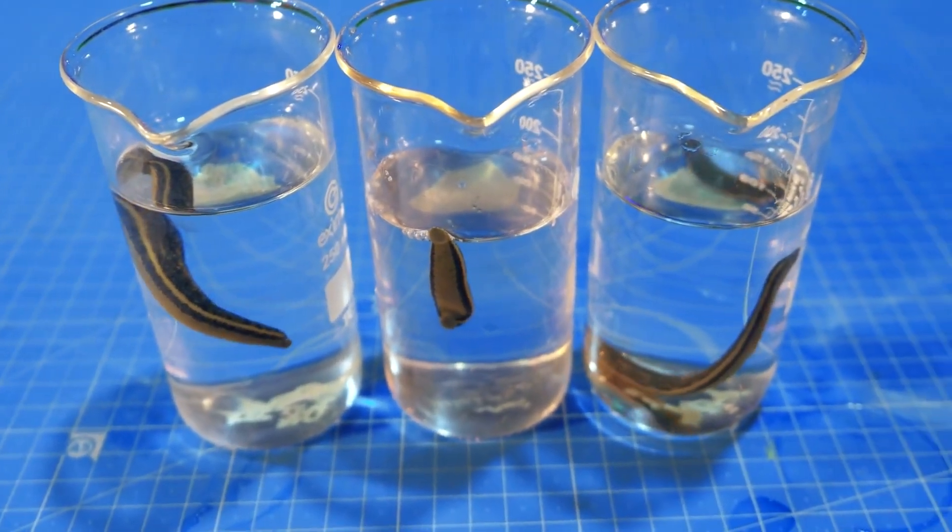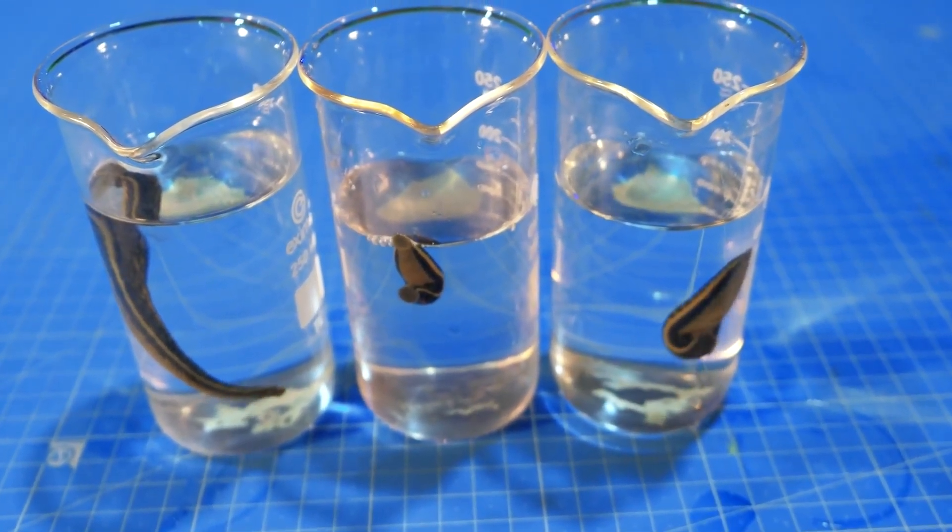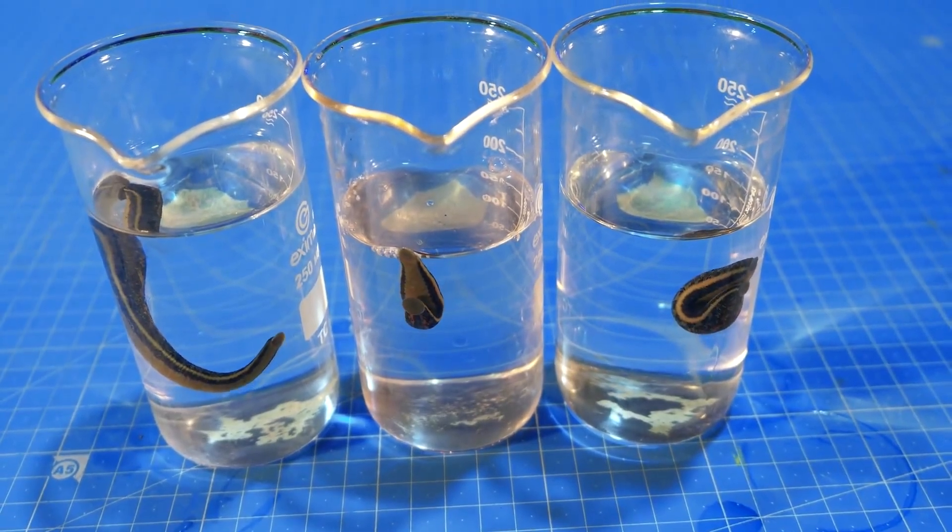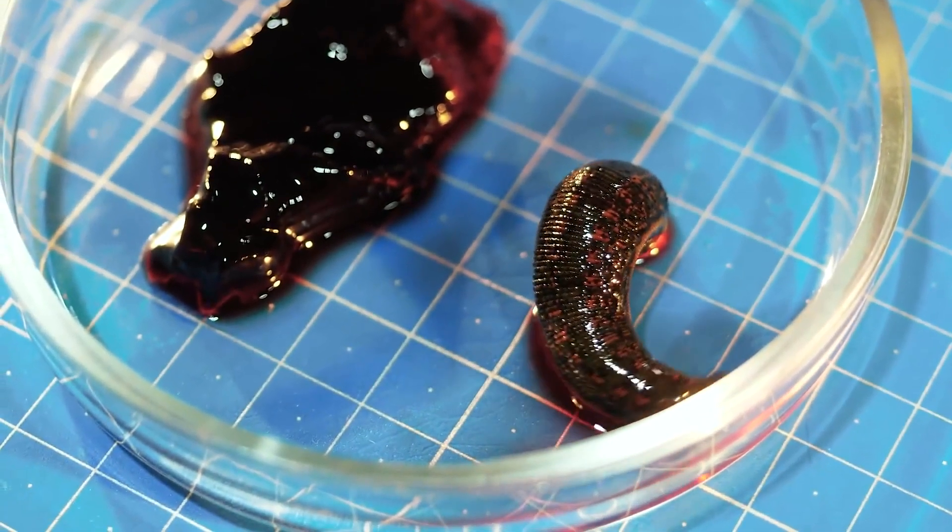And in Vitya's leech, and in the one that drank the blood of an alcoholic, everything is fine. The important thing is that all the leeches are alive.